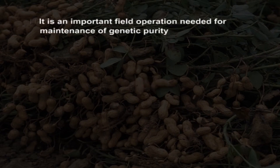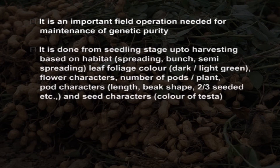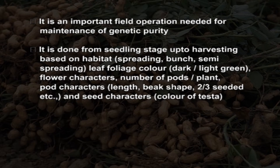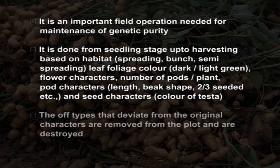Roguing is an important field operation needed for maintenance of genetic purity. It is done from seedling stage up to harvesting based on the spreading type, bunchy type and semi-spreading habit, as well as leaf color (dark or light green), flower characters, number of petals, pod characters such as length and shape, whether 2 or 3 seeded, and seed characters such as color of the testa. Off-types that deviate from the original characters are removed from the plot and destroyed.